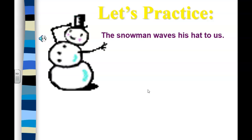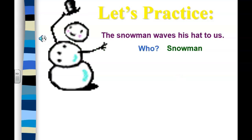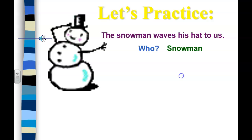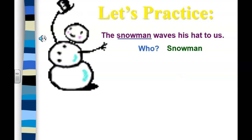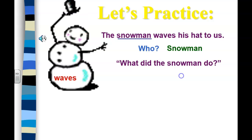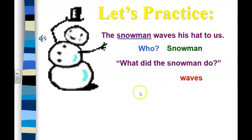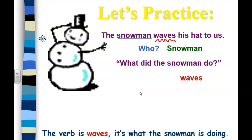'The snowman waves his hat to us.' Who is the sentence about? The snowman — yes, he's our subject. What does the snowman do? Waves. So waves is your verb — it's what the snowman is doing.